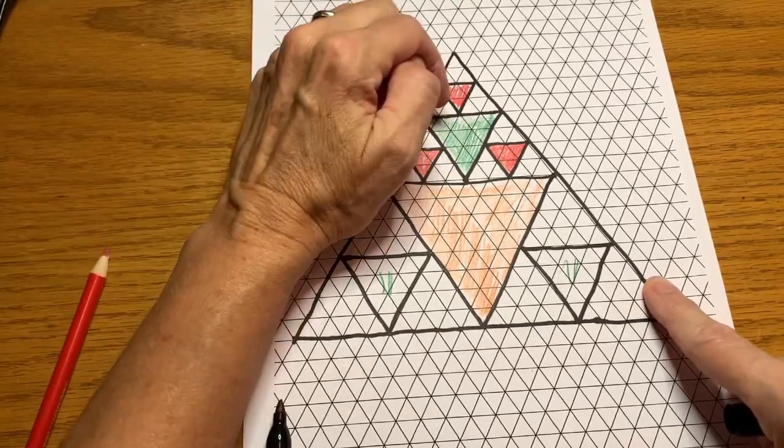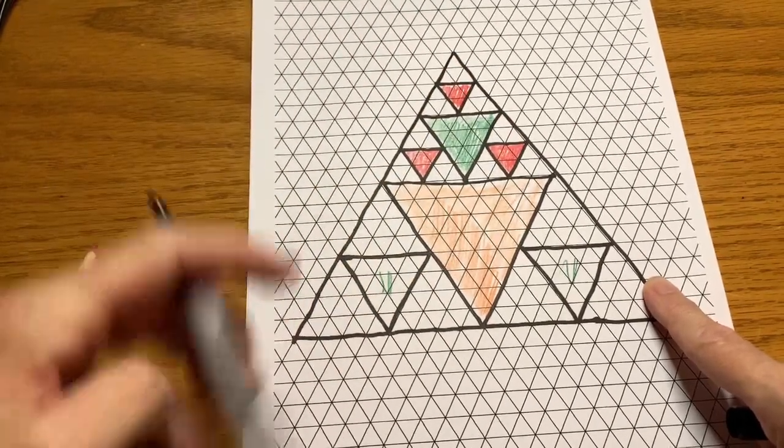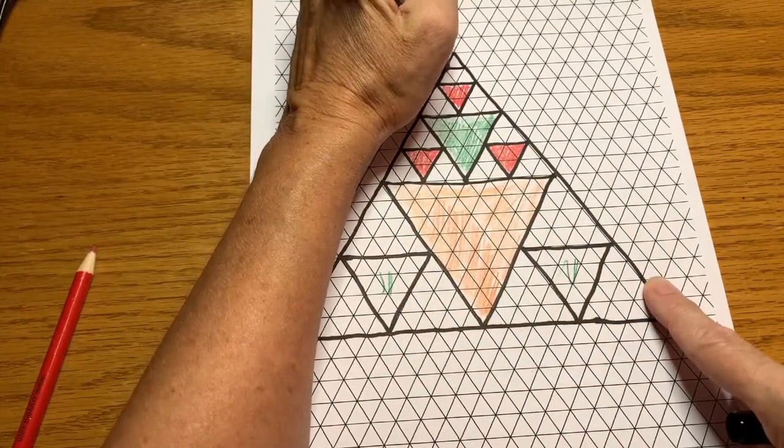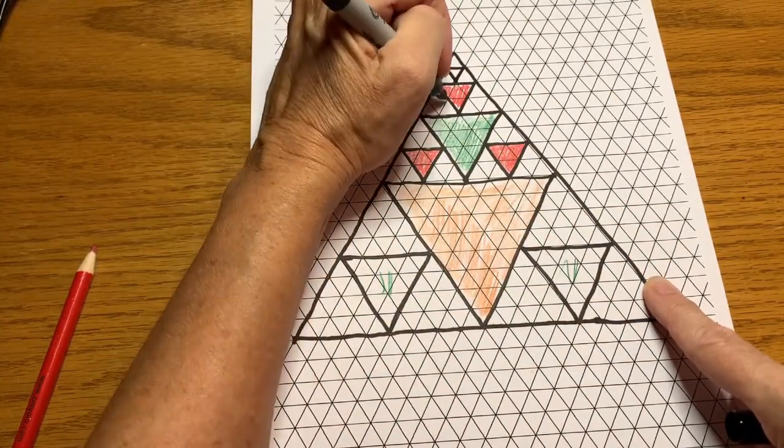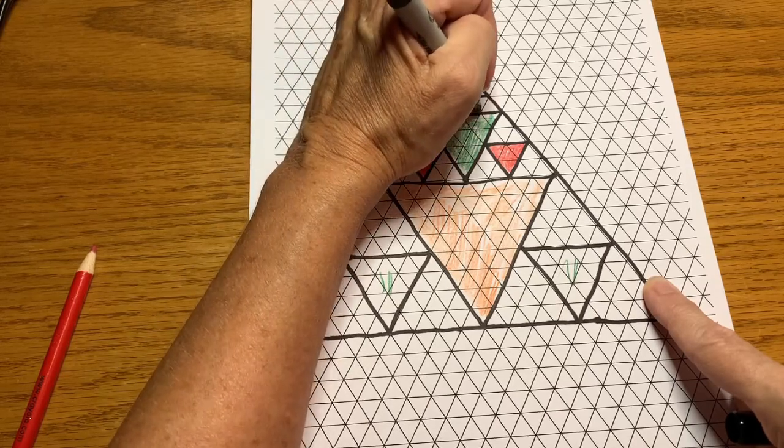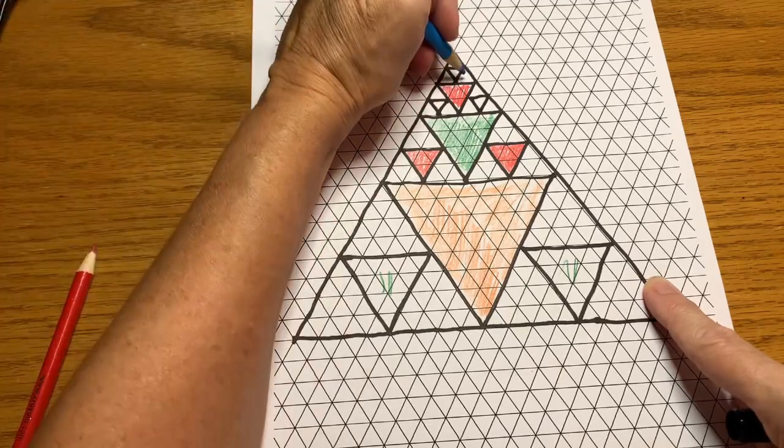And then now we have 1, 2, 3, 4, 5, 6, 7, 8, 9 empty triangles. And there'd be nine here and there'd be nine here. So each of those gets a 1 by 1 triangle. And then we color in that 1 by 1 triangle another color.